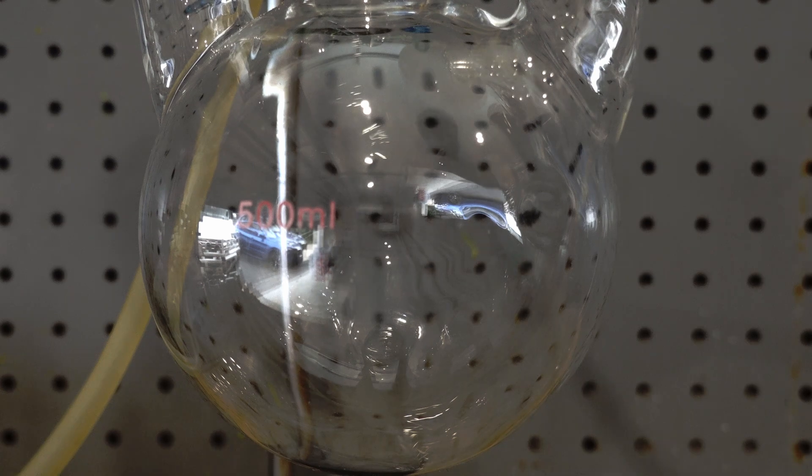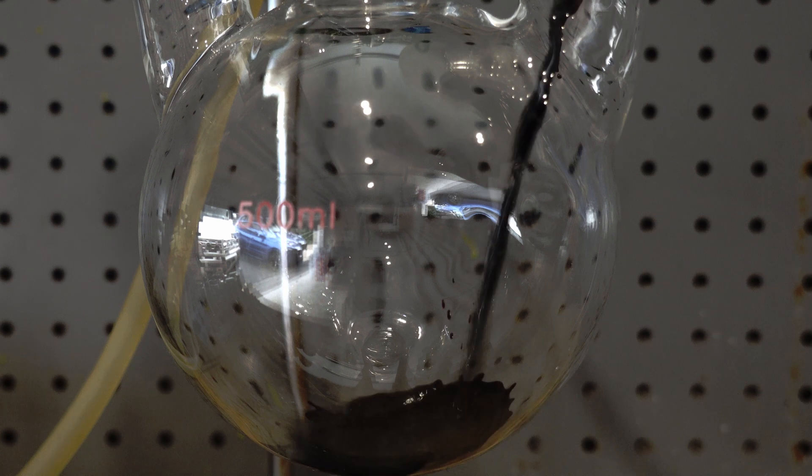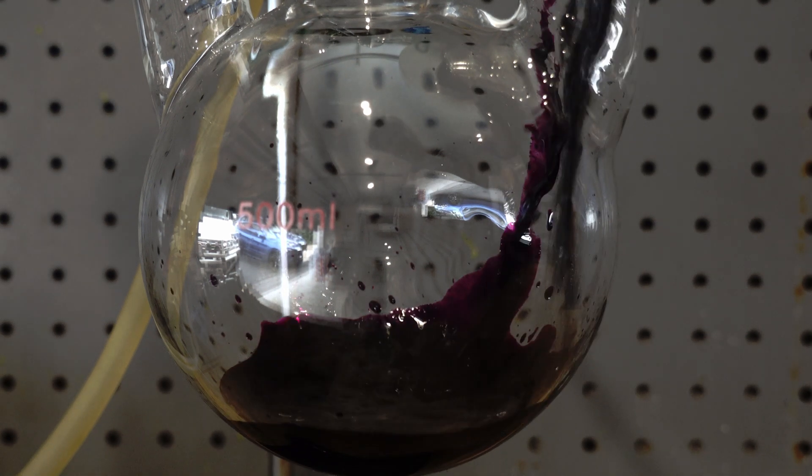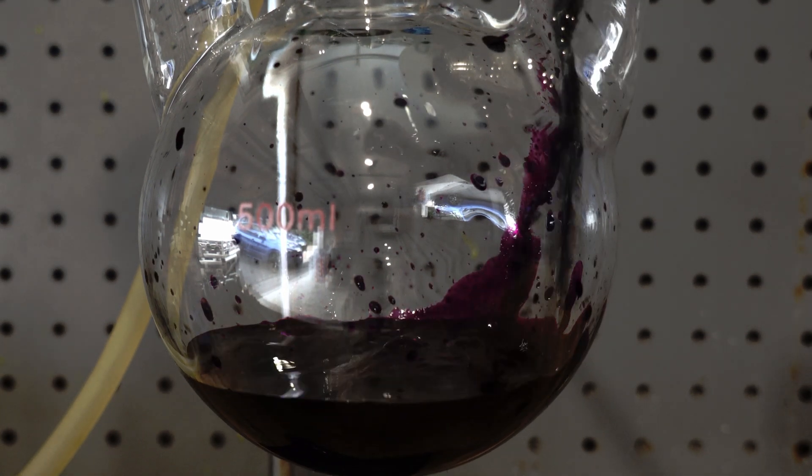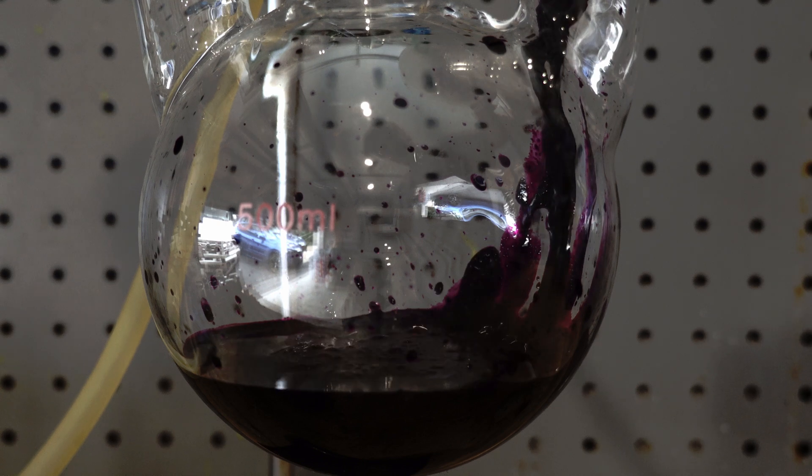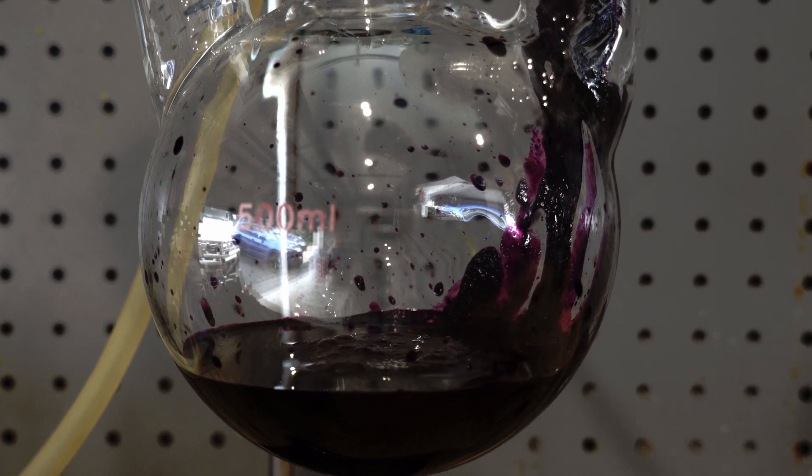Anyways, this mixture was then added to a 1000ml three necked round bottom flask. The addition was quite messy, but this doesn't affect much.